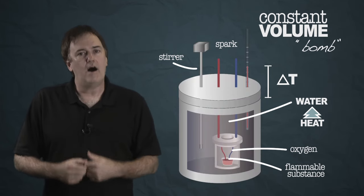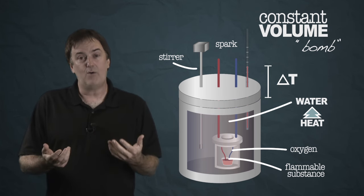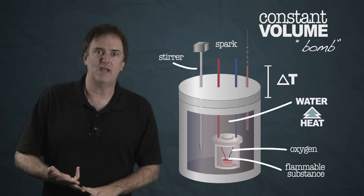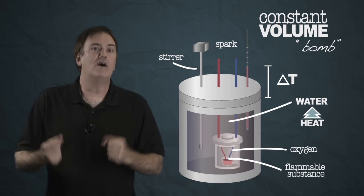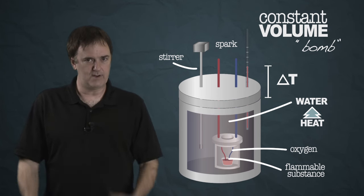That's the basis of calorimetry, it works for bomb, it works for coffee cup, and that's how we get the values of delta H for a reaction, and we get delta E for a reaction. So, you'll see lots of problems in your book on calorimetry, and it's a really powerful technique on how we get all these values in thermodynamics.